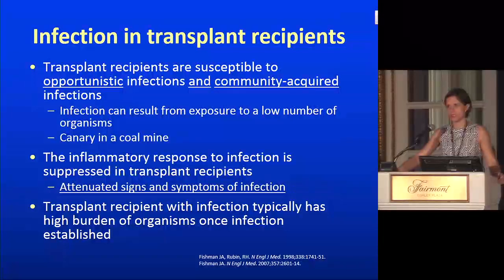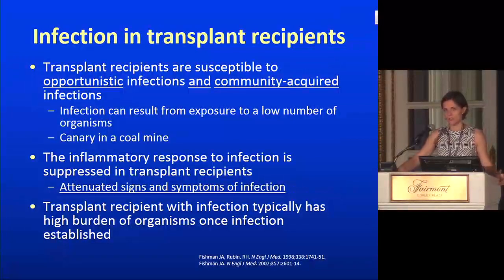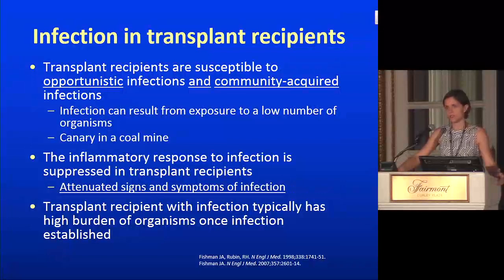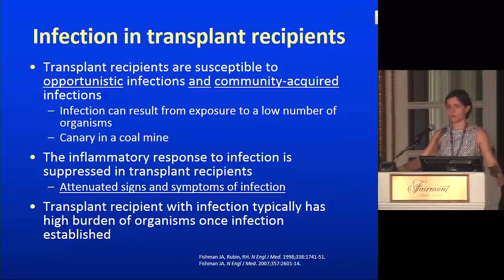This has infection control implications for transmissible infections. You have to make sure you get the precautions right. At my institution, if you have dermatomal zoster and you're an immunocompromised patient — including anyone with a solid organ transplant — you are put on precautions appropriate for a normal host with disseminated zoster: gowns and a negative pressure room, because they are more transmissible than your regular host.